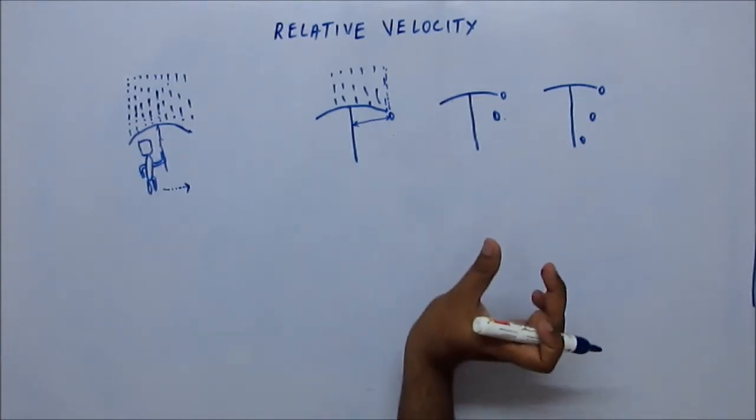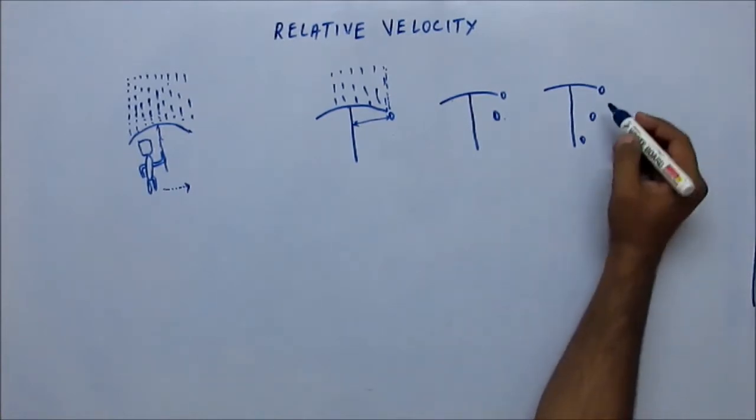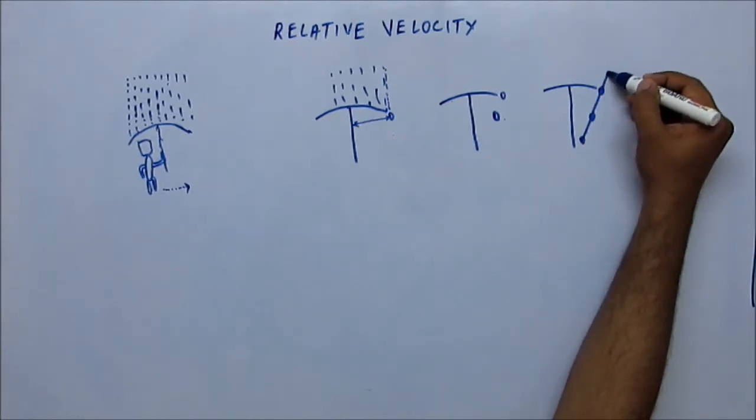The distance between the drop and Tom's vertical posture is going to decrease and decrease as the time passes. So this is the path that Tom would think that the rain is coming from.